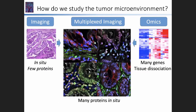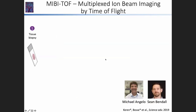So how do we study the tumor microenvironment? We use multiplexed imaging, where we can actually visualize many different proteins in situ. The specific multiplexed imaging that we utilize in our lab is MIBITOF, which stands for Multiplexed Ion Beam Imaging by Time of Flight. It was developed by my postdoctoral advisor, Michael Angelo from Stanford, together with Sean Bendel from Stanford.